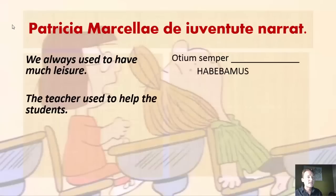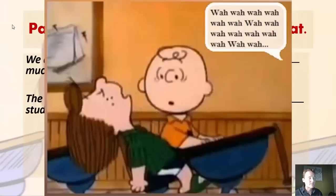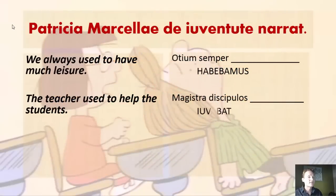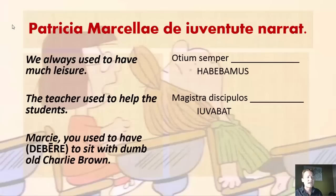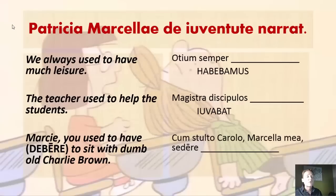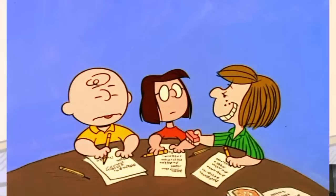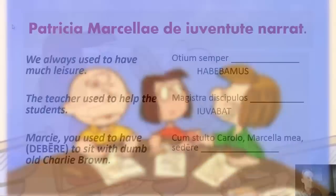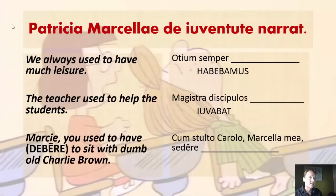The next sentence: the teacher used to help the students — magistra discipulos. Pause the video if you need time to think. Did you write iuvabat? Because if you did, you were correct. Next: Marcy, you used to have to sit with dumb old Charlie Brown. Let's look at what we have without the main verb — how would you fill that in? Did you write debebas? If you did, you were correct.